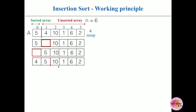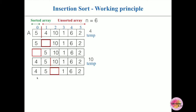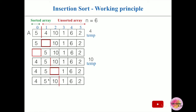Now take 10 and place it in a temp variable. Compare 10 with all elements of the sorted array — the sorted array is scanned from right to left, while the unsorted array is scanned from left to right. 10 is compared with 5; 5 is less than 10 (case 2). This is the correct place for 10, so insert it here.